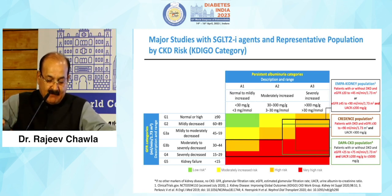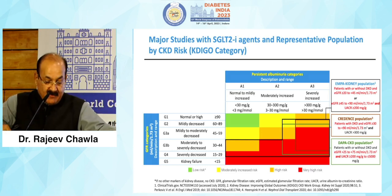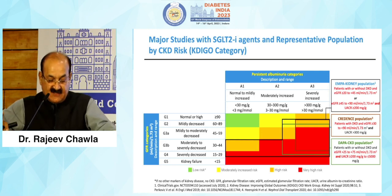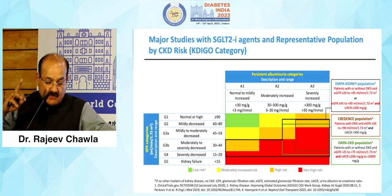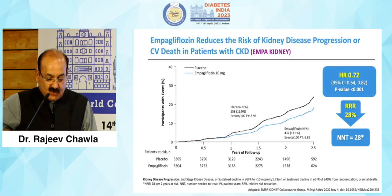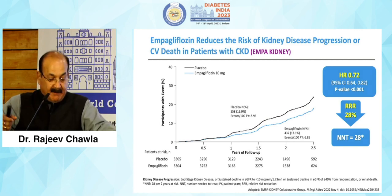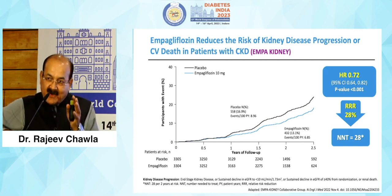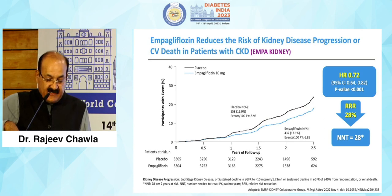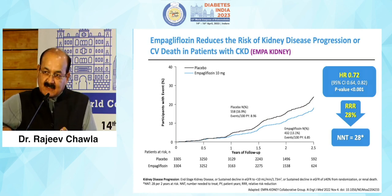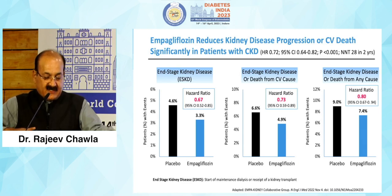Major SGLT2 trials have different KDIGO category populations, so ideally these trials should not be directly compared because they are two heterogeneous populations. EMPA-Kidney had either albuminuria more than 200 with eGFR 45 to 90, or eGFR 20 to 45 with no albuminuria. CREDENCE enrolled all patients with diabetic kidney disease with eGFR more than 30. DAPA-CKD had eGFR between 25 to 75 but albuminuria between 200 to 500, meaning their albuminuria was much higher. Therefore results cannot be directly compared.